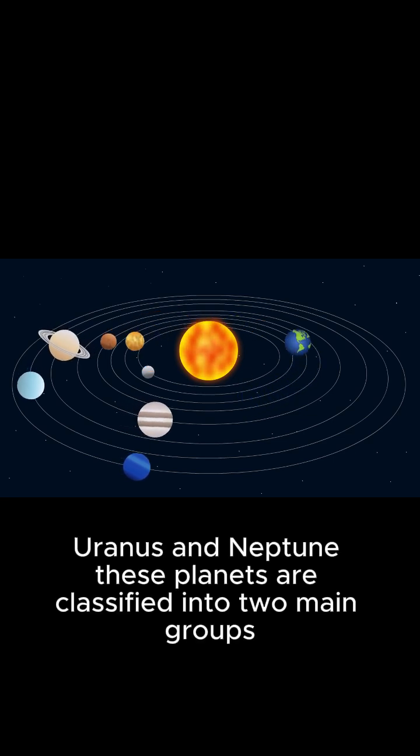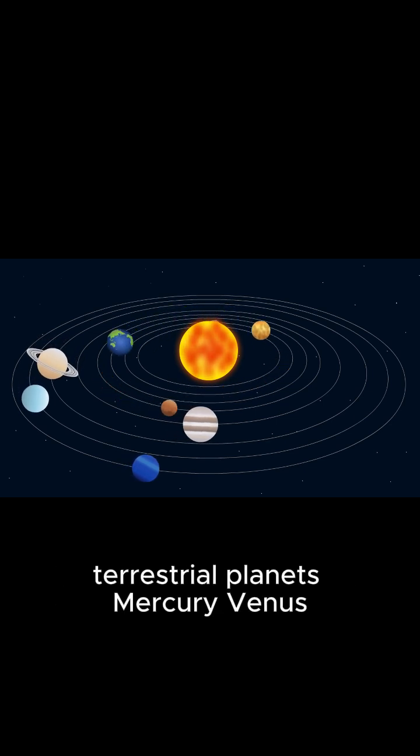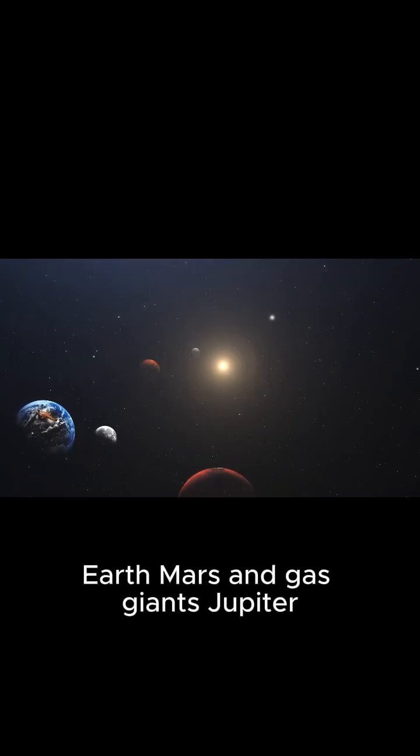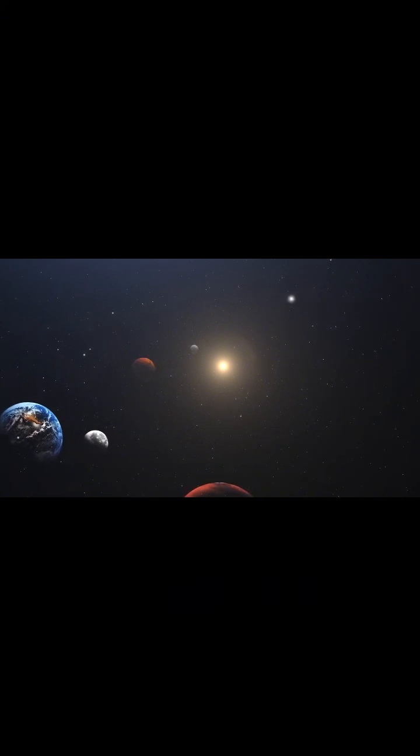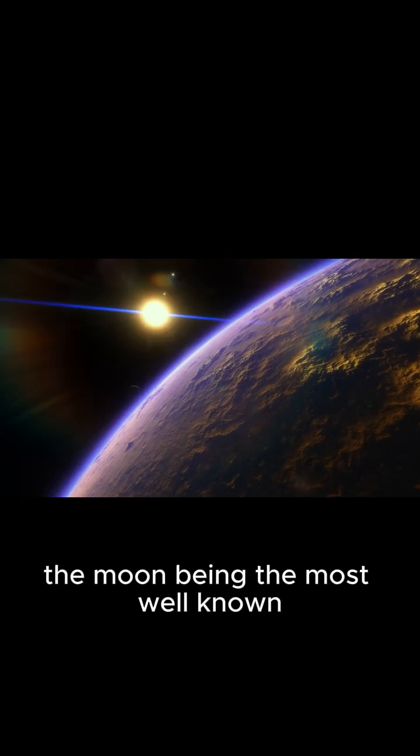These planets are classified into two main groups based on their size and structure: terrestrial planets (Mercury, Venus, Earth, Mars) and gas giants (Jupiter, Saturn, Uranus, Neptune). Many moons orbit these planets, with Earth's moon being the most well-known.